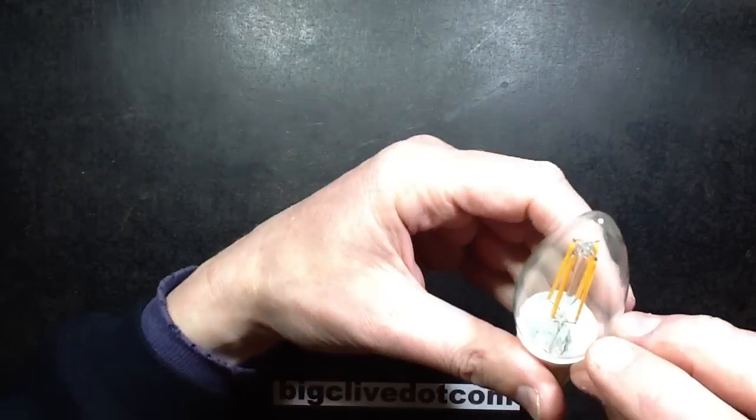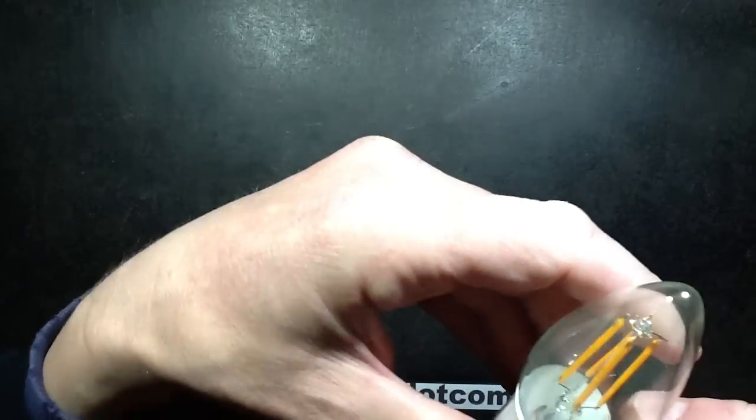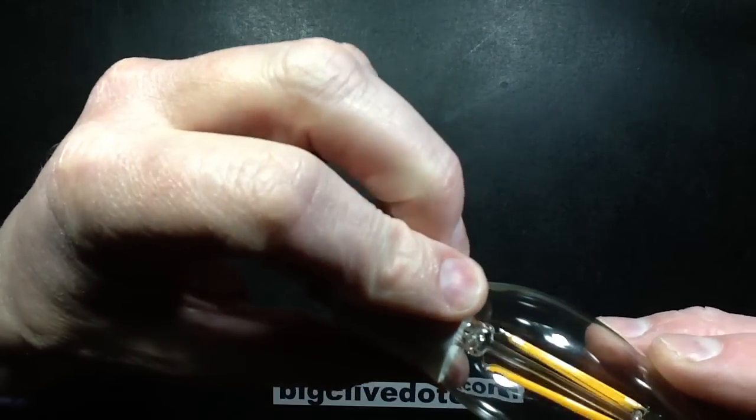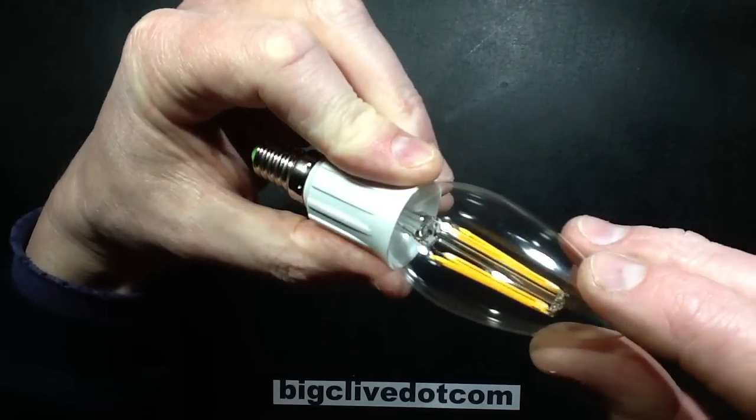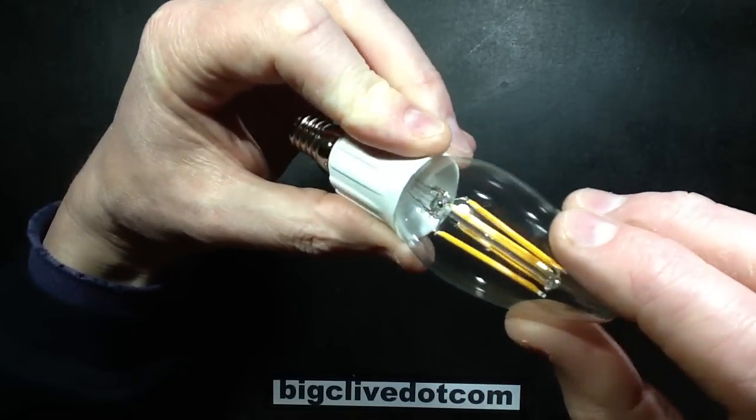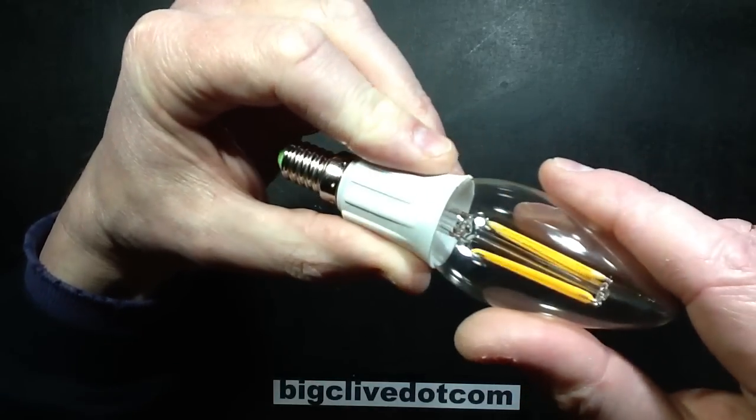So the LED filaments inside are wired as they're linked across as pairs at the top, and then there are four wires going down inside.